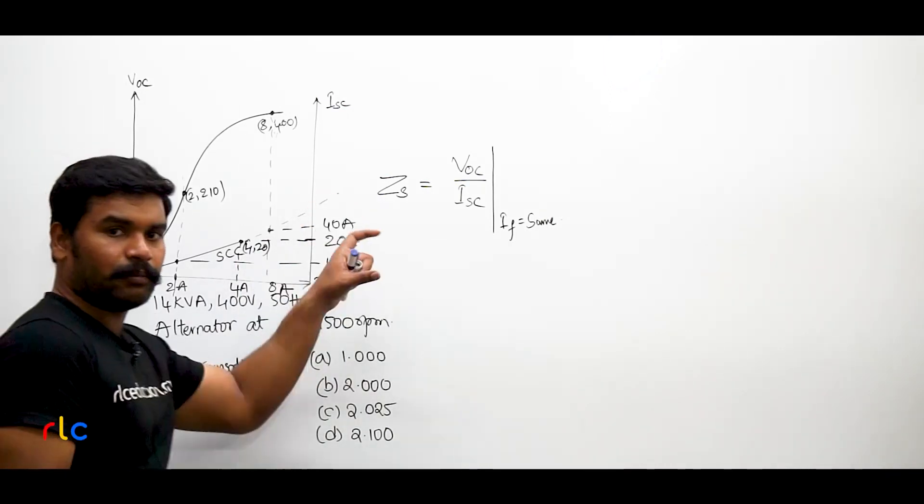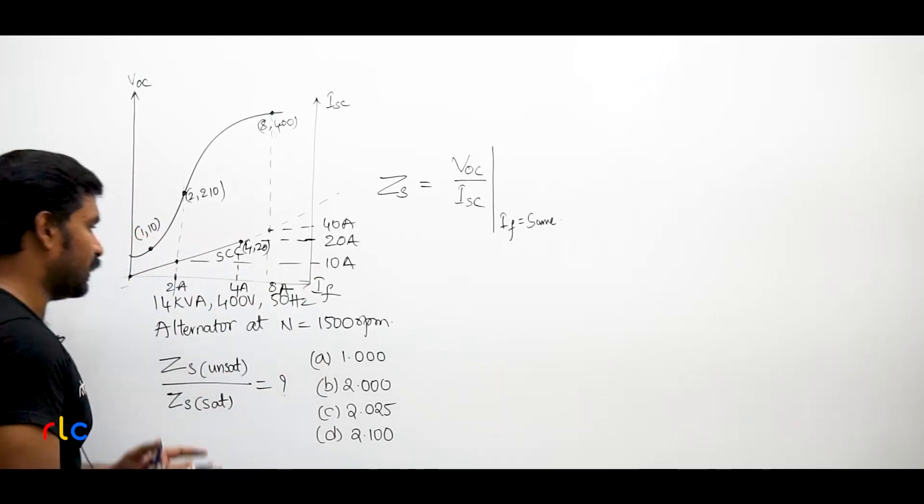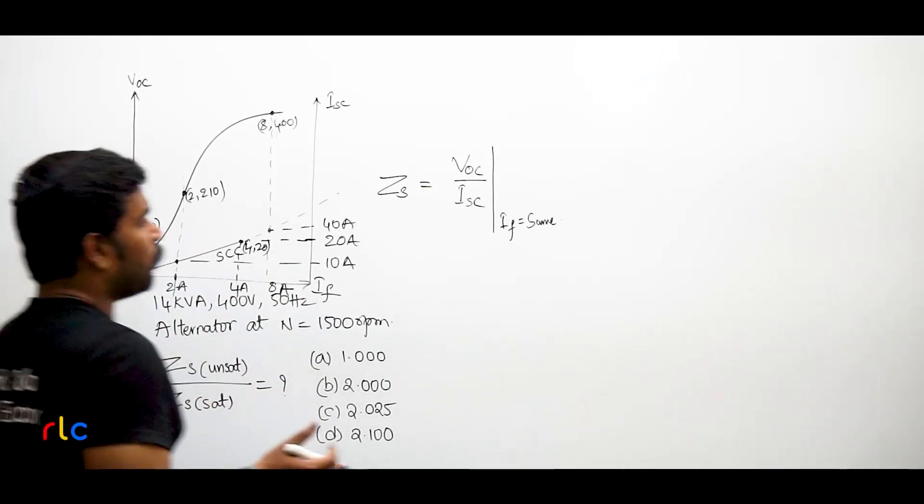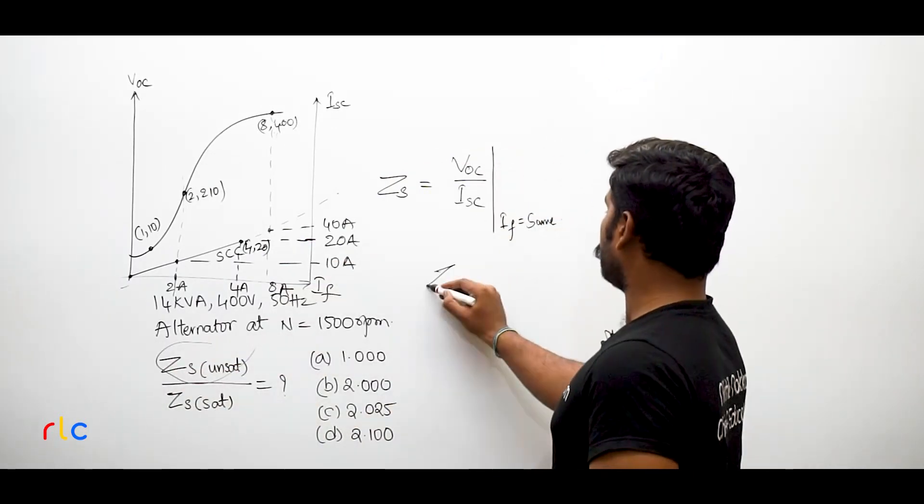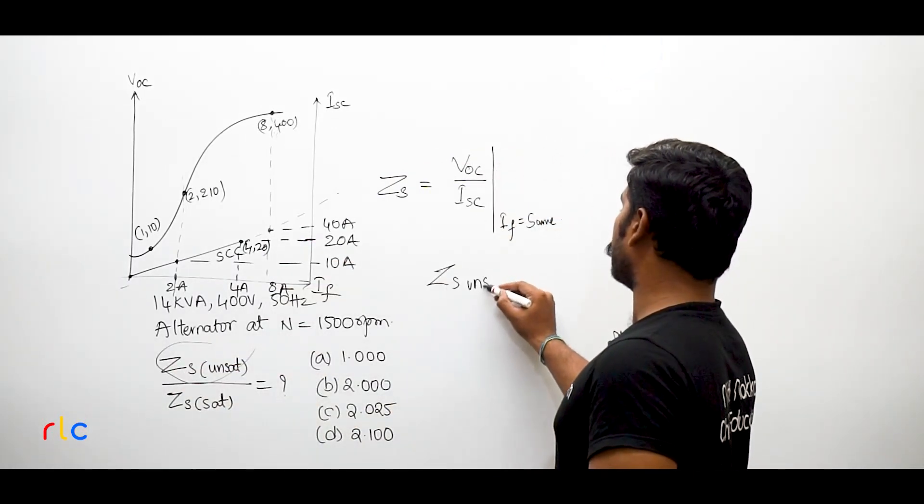You just don't take this graph for scale because there is no space, I have drawn like this. Right, now I want to take first I will calculate what? The unsaturated Zs. Zs unsaturated.